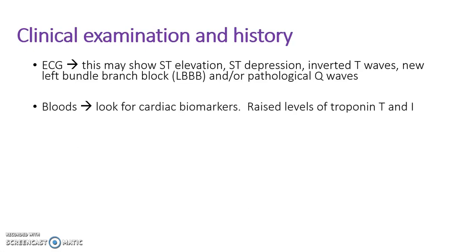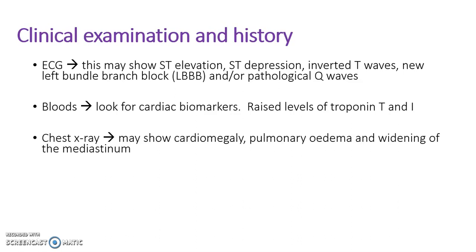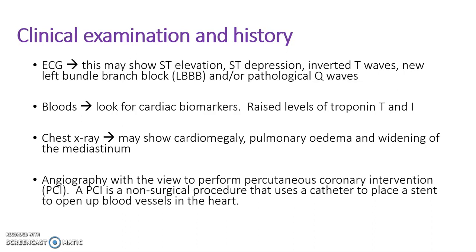For blood tests, look for cardiac biomarkers — raised levels of troponin I and T. A chest X-ray may show cardiomegaly, pulmonary oedema, and widening of the mediastinum. Angiography might be performed. Percutaneous coronary intervention (PCI) is a common intervention: a catheter is used to place a stent inside the coronary artery, which opens up the blood vessel.